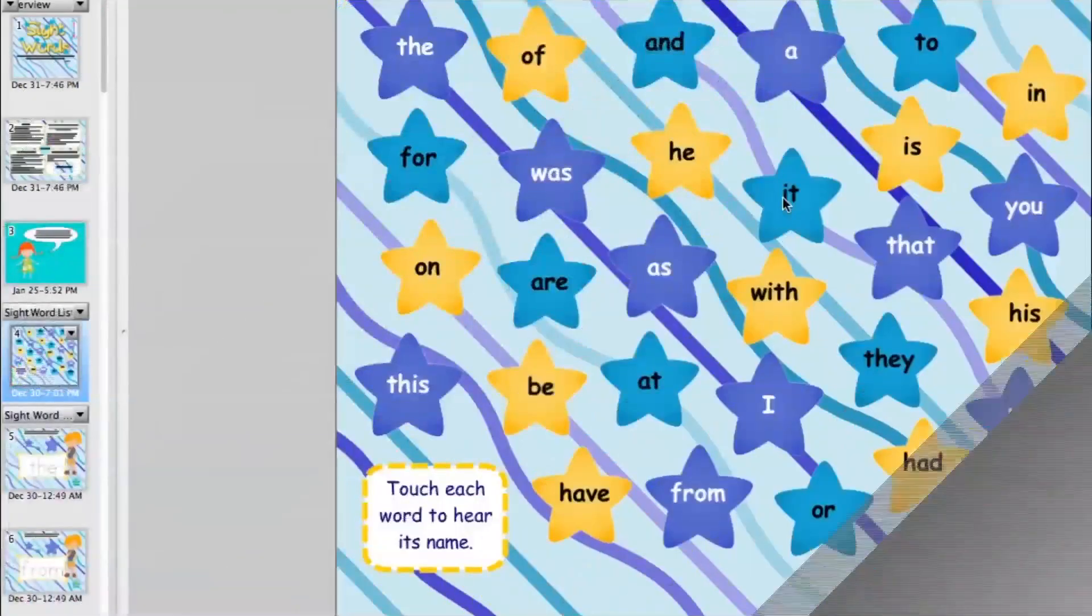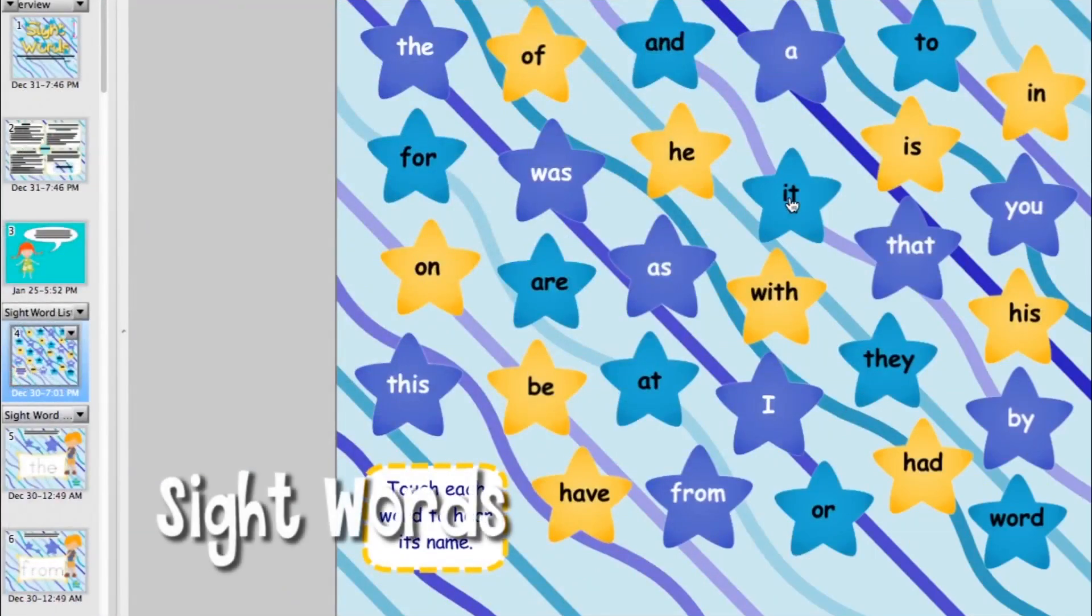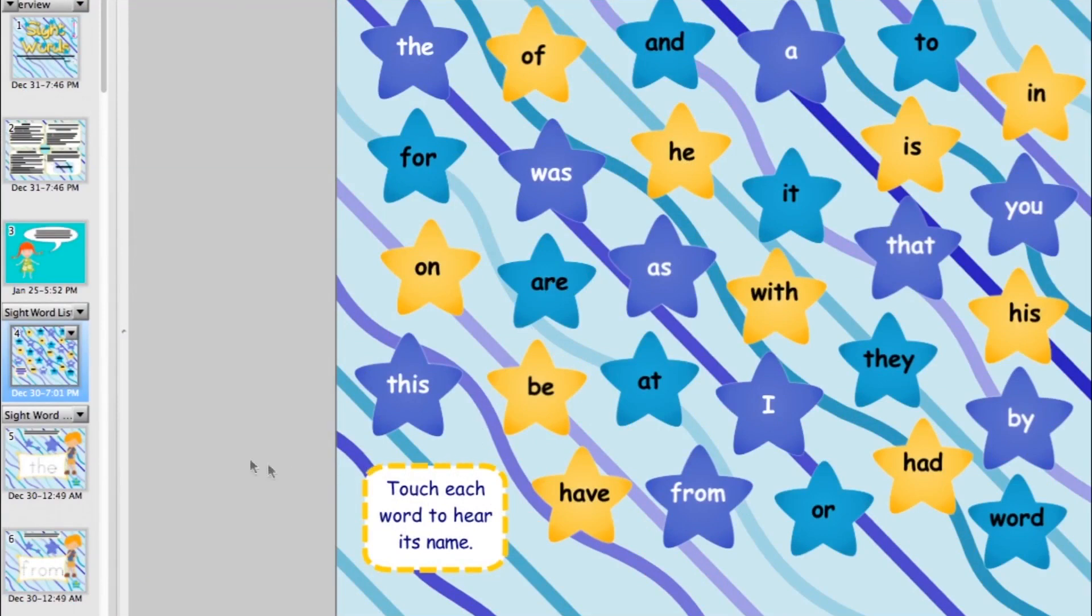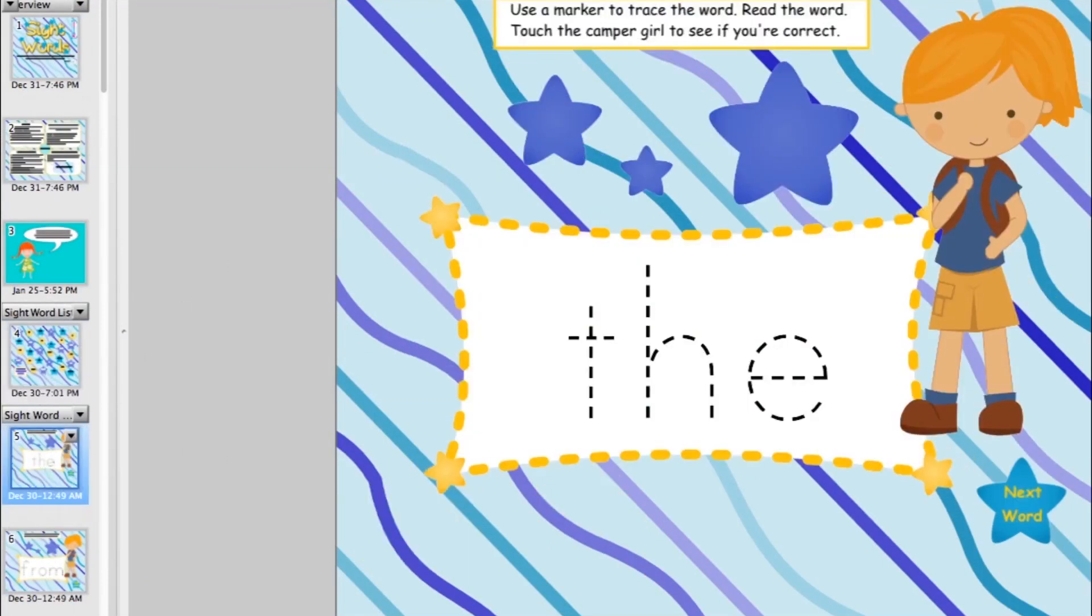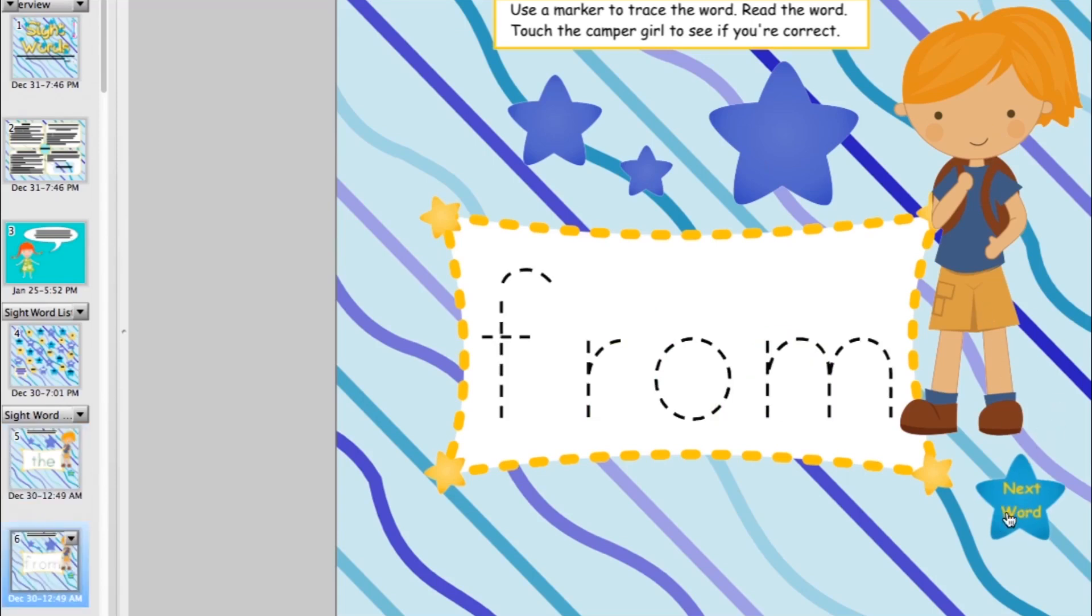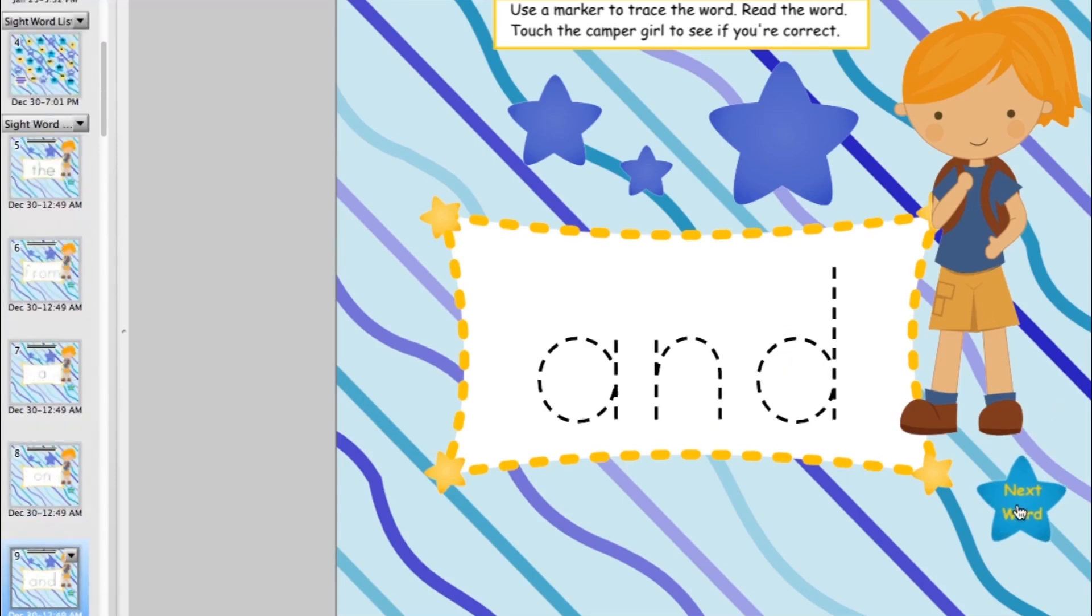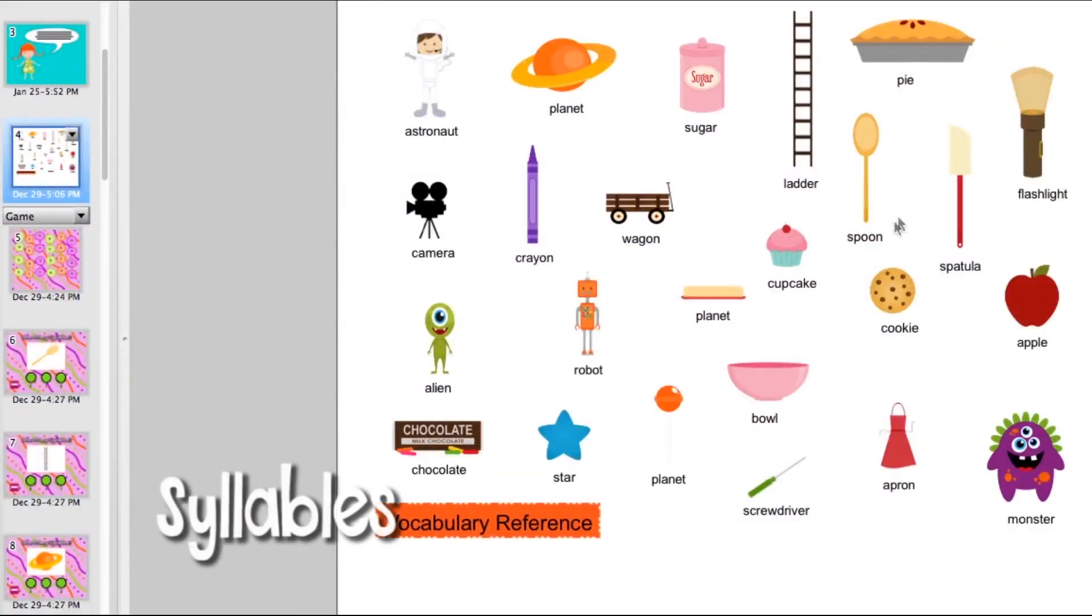In the sight word game, in the first activity when they touch on the star it will say the word that the star has on it, and then they will also use the marker tool to trace each of the sight words. Then touch the girl and she'll say what the sight word is too. And this game covers 30 sight words.